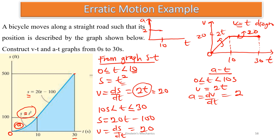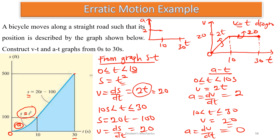For the second interval, 10 < T ≤ 30, the velocity was 20 — a constant. Therefore acceleration A = dV/dT = 0. So the motion lies on the time axis from t = 10 to t = 30. So on the A-T diagram, A = 2 for the first part and A = 0 for the second part.